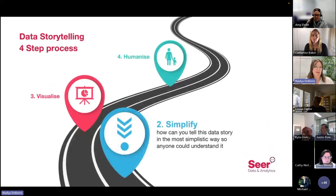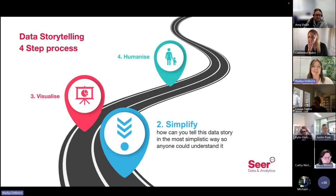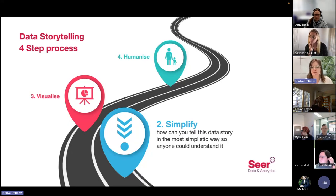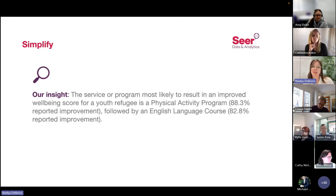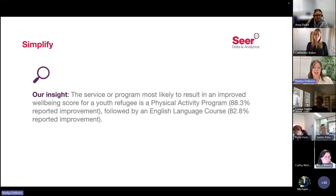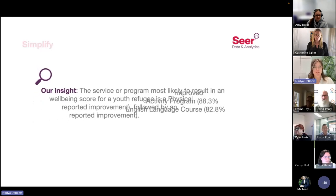The second step in creating a data story is Simplify — determining how we can tell this story in the most simplistic way so anyone could understand it. This is one of my greatest passions, and I think it's because I come from a mathematics background, which is so jargon-heavy and hard to sift through. It's really important to me that every piece of information I share is as simple as possible. I've gone ahead and written down the data into a singular statement: 'The service or program most likely to result in an improved well-being score for a youth refugee is a physical activity program — 88.3% reported improvement — followed by an English language course — 82.8% reported improvement.'